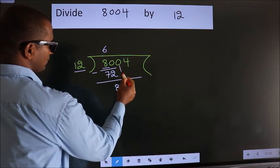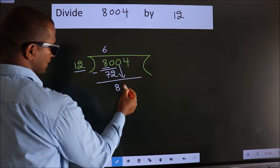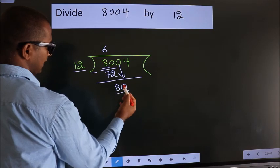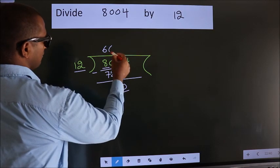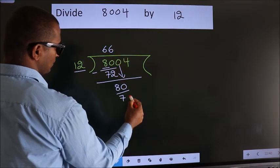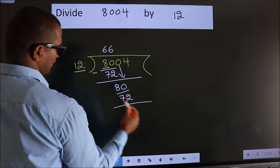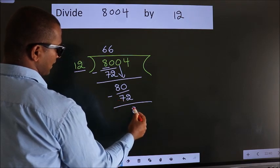After this, bring down the beside number. So, 0 down. So, 80. A number close to 80 in the 12 table is 12 times 6 is 72. Now we subtract. We get 8.